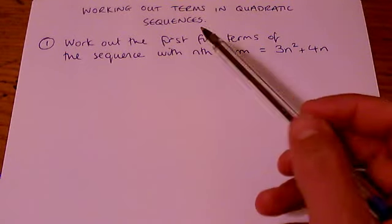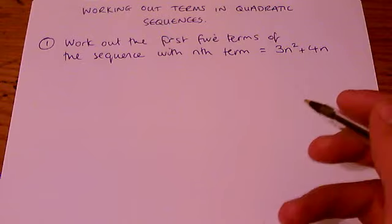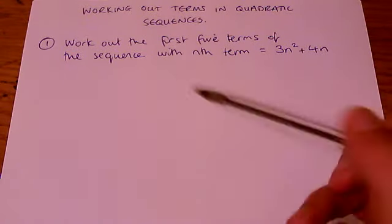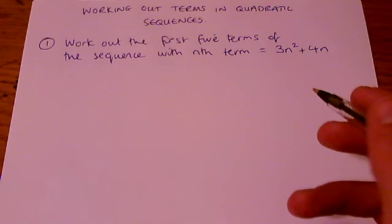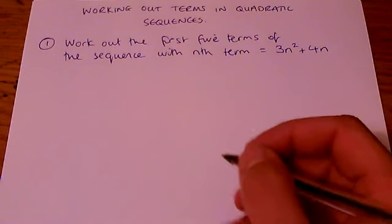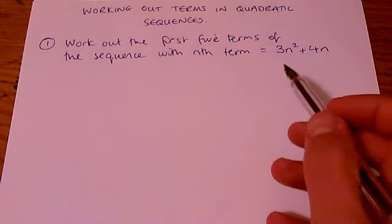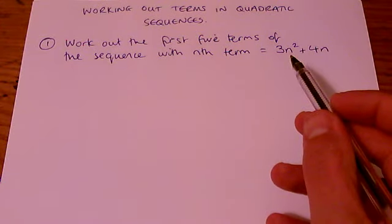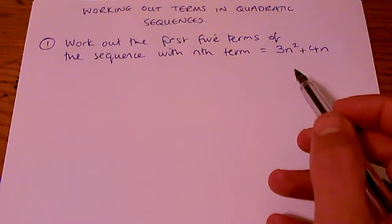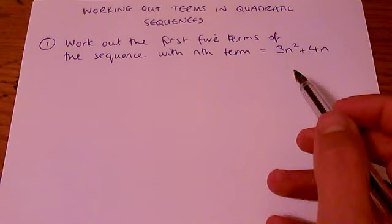In this video, we're going to look at how you can work out the terms in quadratic sequences. This first question says work out the first five terms of the sequence with nth term 3n squared plus 4n. Now that means that we are going to have to replace the n with numbers 1, 2, 3, 4 and 5 in turn to work out the first five terms of the sequence.